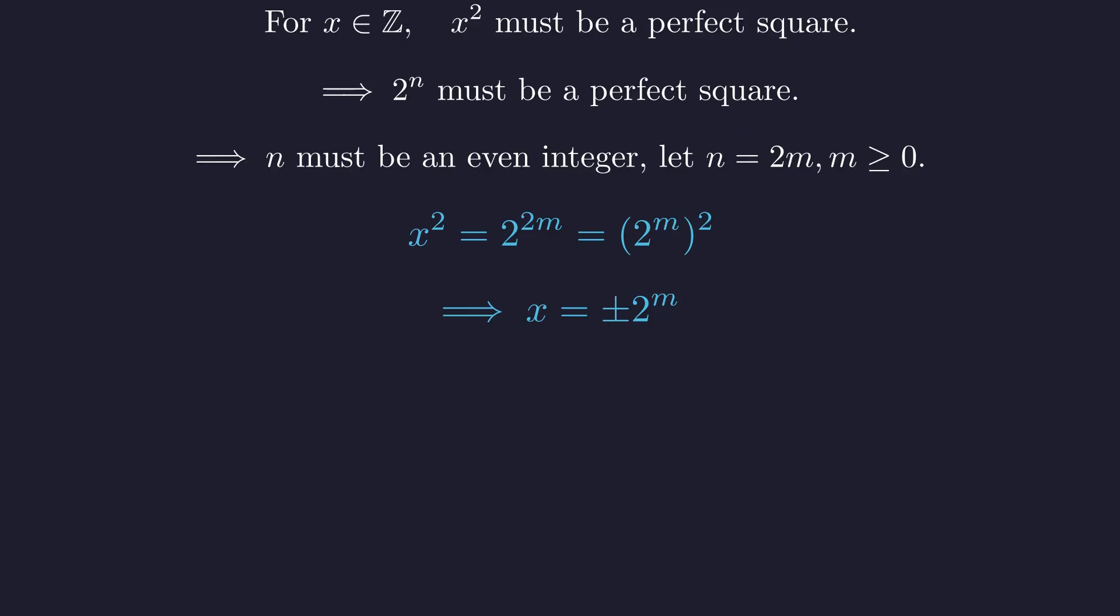This gives us the general form of the infinite solutions. For any non-negative integer m, n is 2m and x is plus or minus 2 to the m.